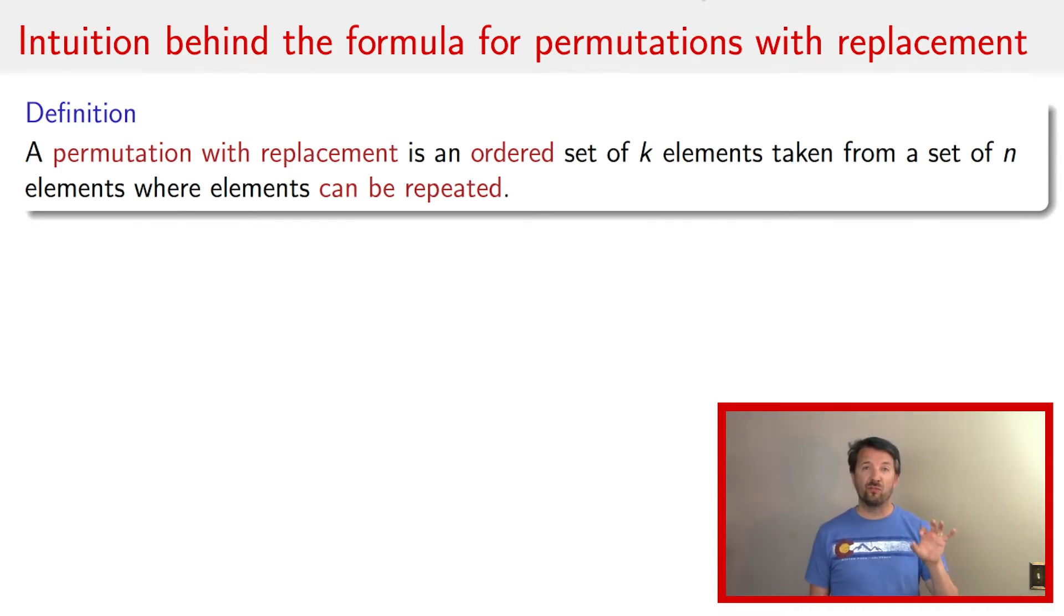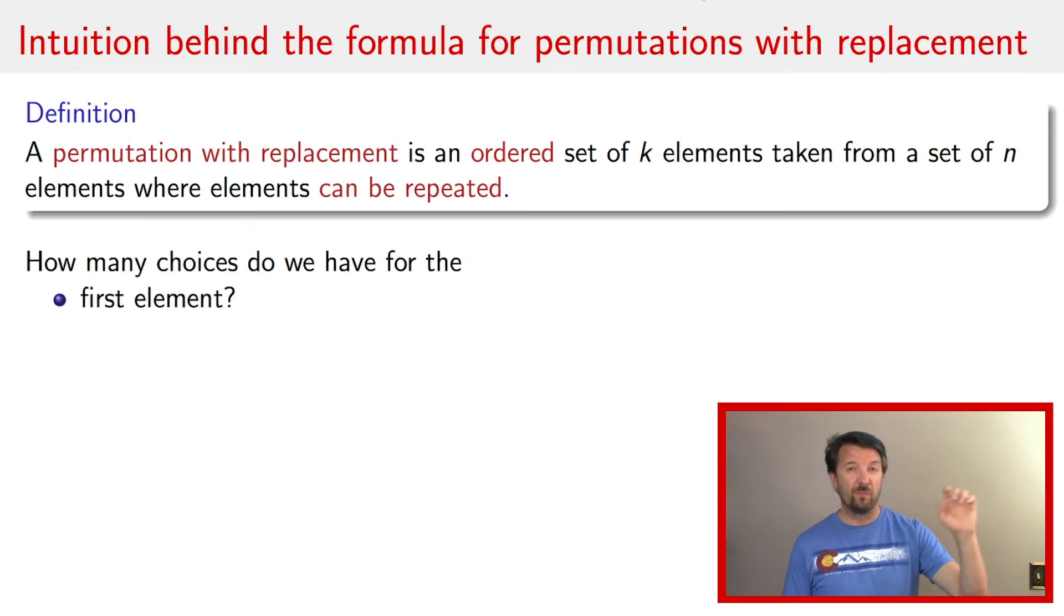Now to get the intuition behind the formula, we're going to be thinking about the process by which we get that set, the set that we're interested in. And the process is this, the process says, look, how many ways are there to get the first element? How many choices do you have when choosing that first element? Well, there are n items in the set that we're drawing from, so there are n ways to choose that first element.